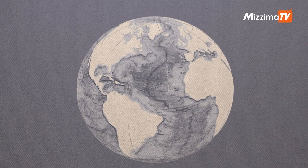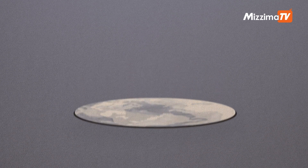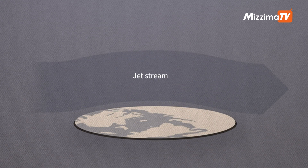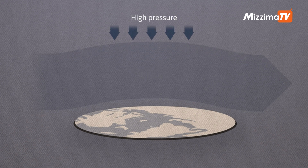A heat dome is a high-pressure system in the upper atmosphere which stalls, causing heat waves. It occurs when warm air, carried by a high-altitude air current called the jet stream, rises and encounters high atmospheric pressure. The high-pressure system acts like a dome, trapping the warm air.